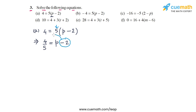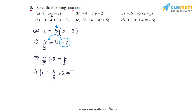The next step is to get rid of the minus 2 by transposing it to the left side so that it becomes plus 2. So we get 4/5 + 2 = p. We can write 2 as 10/5, and taking the LCM, we get 14/5. So the solution of the equation in part a is p = 14/5.